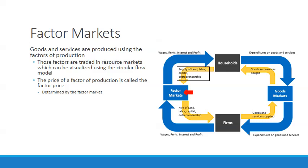In factor markets, firms hire land, labor, capital, and entrepreneurship, and they pay wages, rents, interest, and profits. The price of financial capital is interest — that's one of our primary focuses for this lesson. So firms pay interest for financial capital, and they're paying it to households through the factor markets.